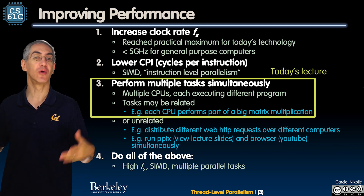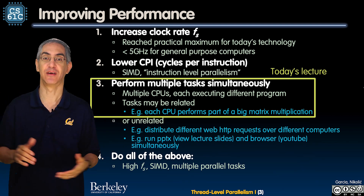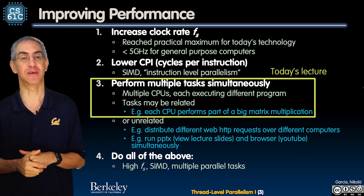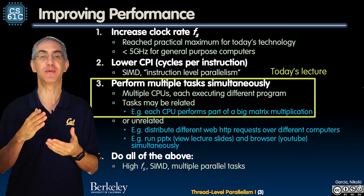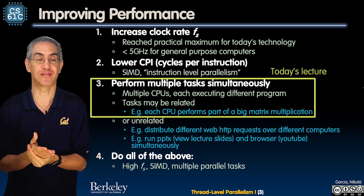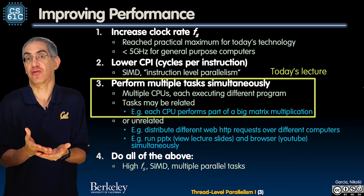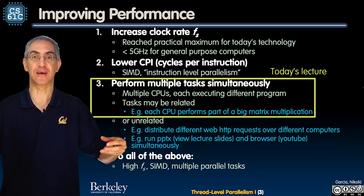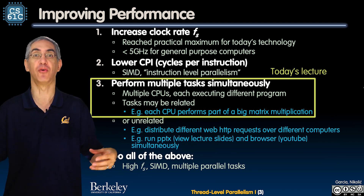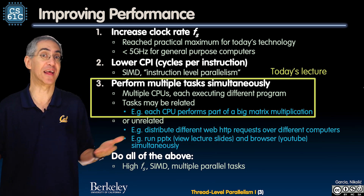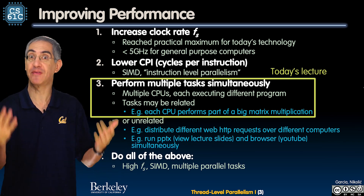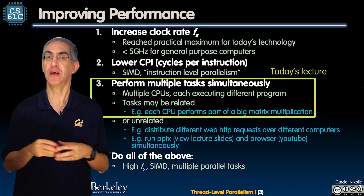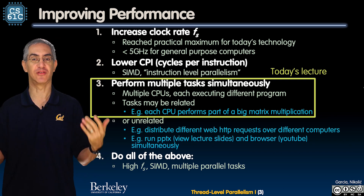Next, we can also lower the CPI — cycles per instruction. This means go SIMD: single instruction, multiple data. Can one instruction operate on wider data? Can you operate on four floats at once? That'd be amazing. We've done that and talked about that in the last lecture. So try to go wider — go SIMD.